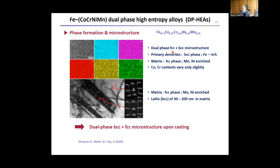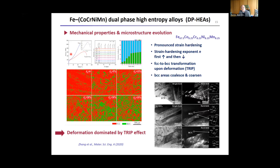You can combine relatively ductile FCC phases plus BCC phases, which give additional strength. This should roughly indicate that you can create dual-phase high entropy alloys with an intriguing microstructure that may undergo really pronounced work hardening. This is in this specific iron-based alloy series, again due to a TRIP effect where you simply have an FCC-to-BCC transformation during deformation. The recipe is, besides making the alloys more complex, to also induce additional phase transformations that aid in work hardening and aim for increasing ductility.